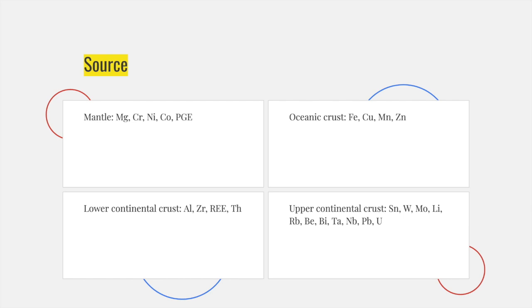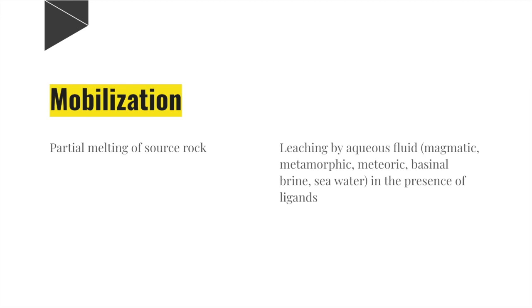Generally, the metals from these sources are mobilized by fluids. Leaching by aqueous fluids such as magmatic, metamorphic, meteoric, basinal brine and seawater in the presence of ligands is a common process. Similarly, partial melting of source rocks too mobilizes the metals by magma.